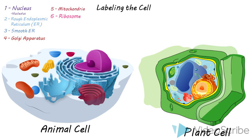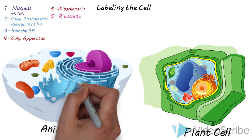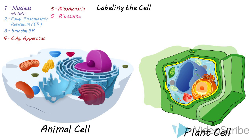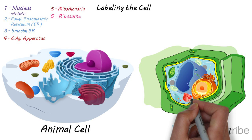Ribosomes are these small little dots on the outside of the rough ER or they can also be free-floating in the cell and these are what give the rough ER its roughness.